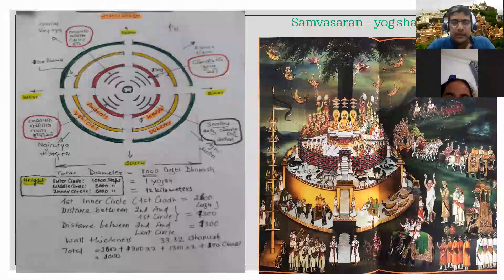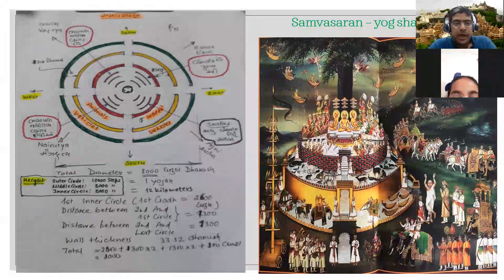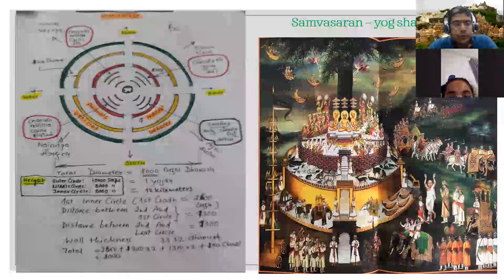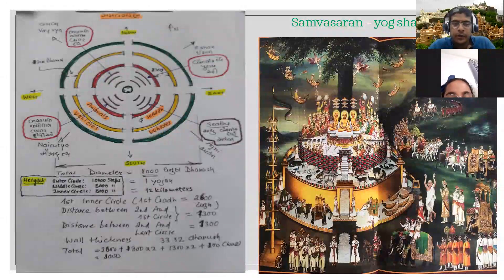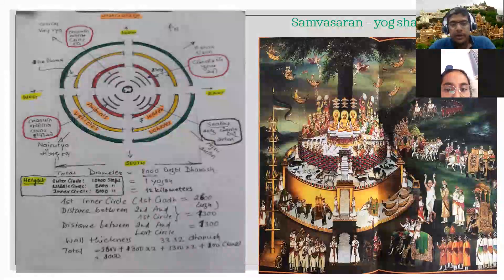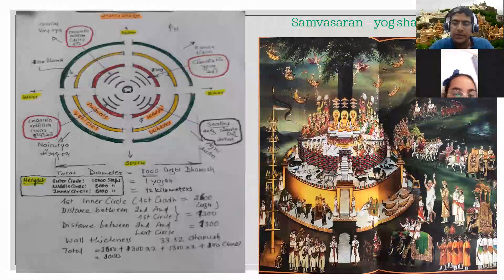In the northwest corner: the first Parashada has Bhuvanpati Devitas, the second has Jyotis Devitas, and the third has Vyantar Devitas. In the southwest corner: the first Parashada has Bhuvanpati Devas, the second has Jyotis Devas, and the third has Vyantar Devas. These are the 12 Parashadas sitting in the topmost Gharad. The second Gharad is for all Tiriyanj, and the last Gharad is for parking vehicles.